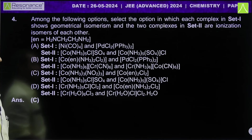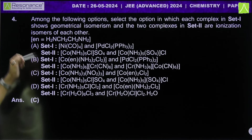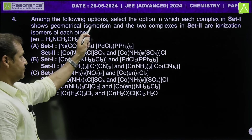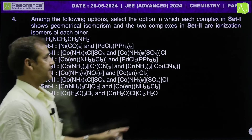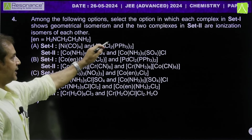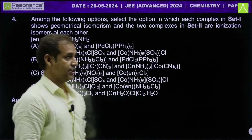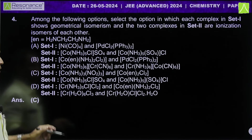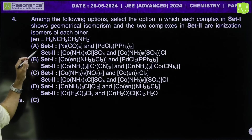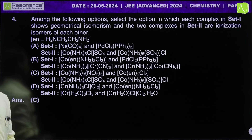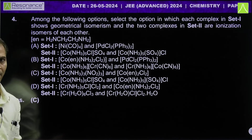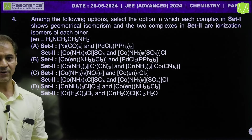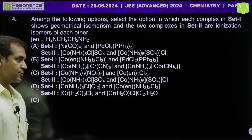Come on, let's go to the next question of inorganic Paper 1. Question number 4: among the following options, select the option where each complex in Set 1 shows geometrical isomers and the two complexes in Set 2 are ionization isomers of each other. To save time, we need to increase our speed.